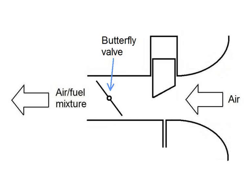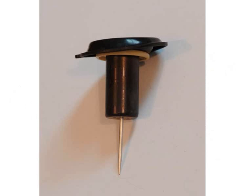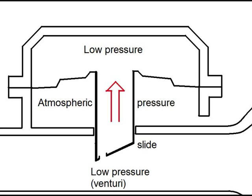But how does the slide adjust itself? It does so through a membrane situated at its top. As the pressure in the venturi gets lower, so does the pressure above the membrane of the slide, causing it to pull the slide upwards.